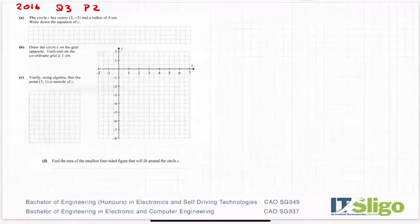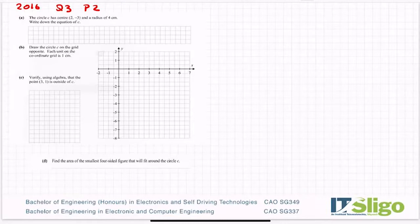2016 question 3 on coordinate geometry. The circle C has center (2, -3) and a radius of 4 centimeters. Write down the equation of C.